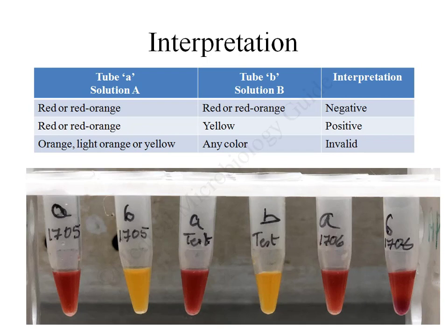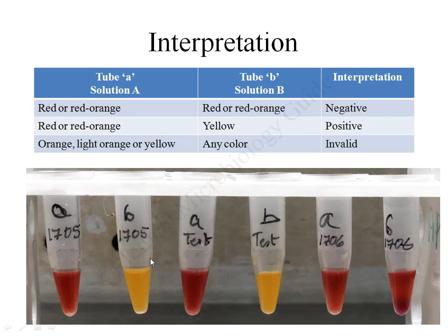To interpret the reaction: if tube A is red or orange and tube B is also red or orange, the test is negative. If tube A is red or orange and tube B has turned yellow, the test is positive. If tube A is orange, light orange, or yellow and tube B is any color, the test is invalid. In this demonstration, Klebsiella pneumoniae ATCC-1705 (positive control) produced a clear color change in tube B. The test strain (a carbapenem-resistant clinical isolate) was positive, and ATCC-1706 (negative control) showed no color change in tube B.